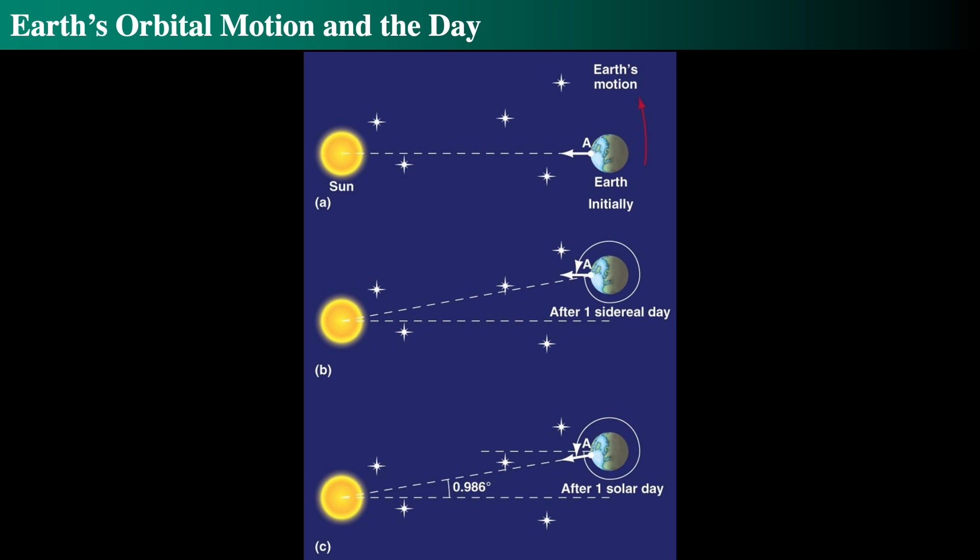If we were telling time by the stars, we could define the day by when, say, Orion is directly overhead, or a star is due south at midnight. If there was some particularly bright star we could see all the time — maybe like Betelgeuse goes supernova and we could see it in the daytime — it's possible we could tell the time by Betelgeuse if it lasted for centuries. But we tell the time of day by the sun, and the sidereal day is different.